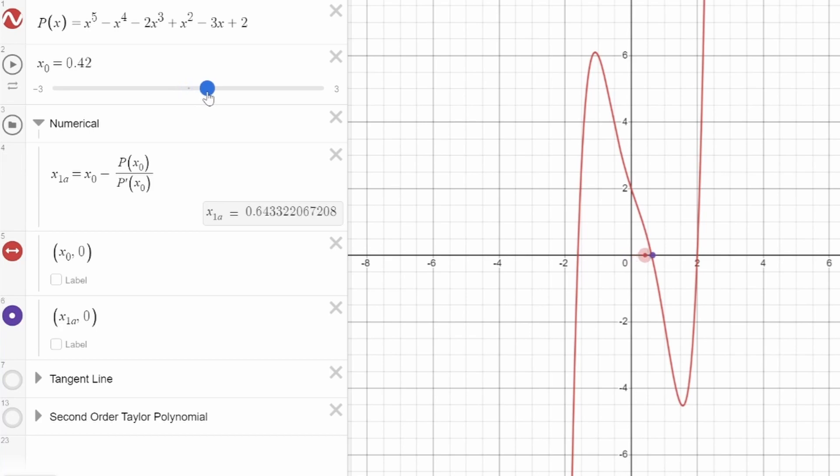As you can see, when I move the x0 value close to one of the roots of the polynomial, the x1 value is almost always even closer to the root. And this works even when I'm very far away from a root, like here, or here.